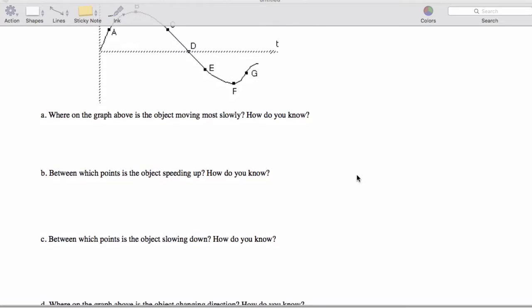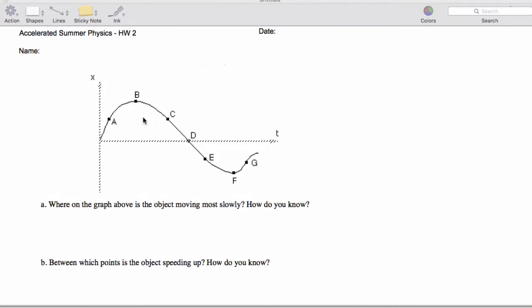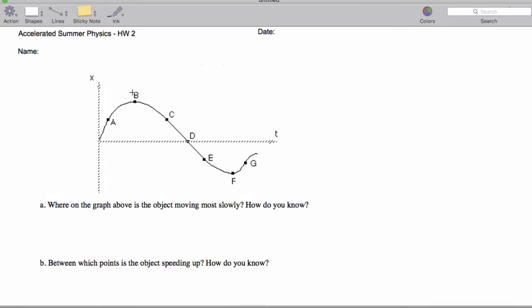All right, let's take a look at homework from last week. Where on this graph is the object moving most slowly and how do we know? That always happens at a point where the slope is the flattest. In this case that's going to be B and F because we have a flat slope.